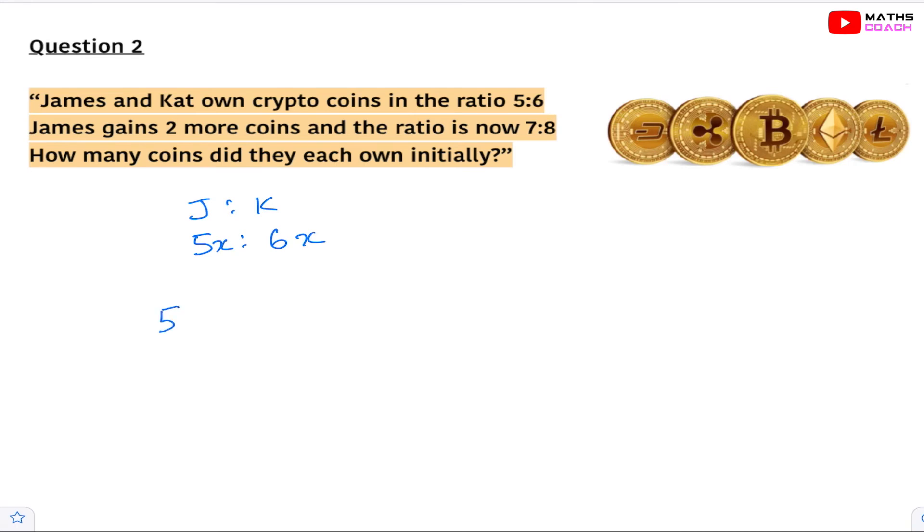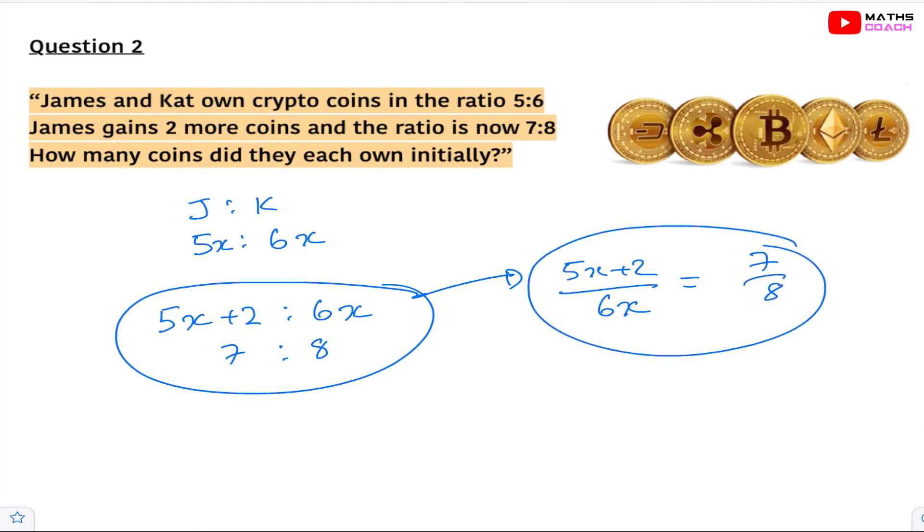So James will be 5x plus 2. Now it doesn't say anything about gaining those coins from Kat, so Kat remains as 6x. Now this new ratio is represented by 7 to 8. So again we will be looking at this and turning this into equivalent fractions. So let's go. We can have 5x plus 2 over 6x is equal to 7 over 8. So now we will cross multiply and solve this.